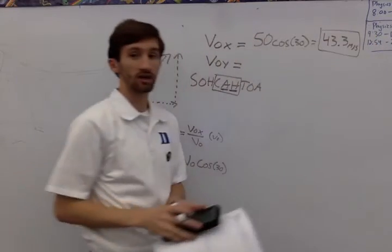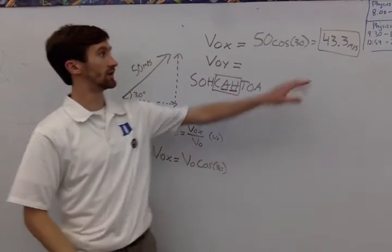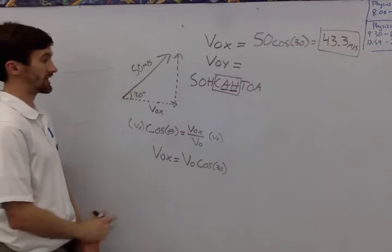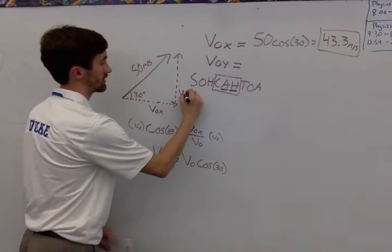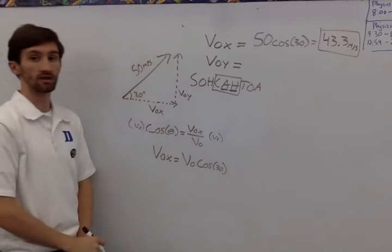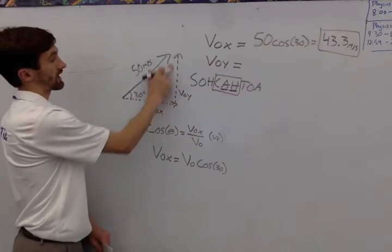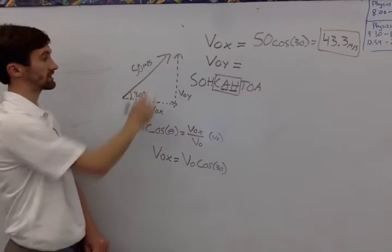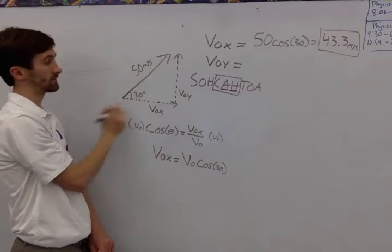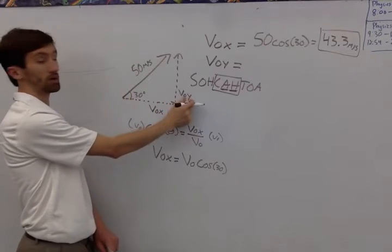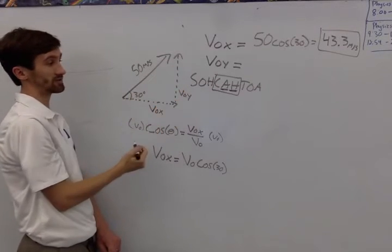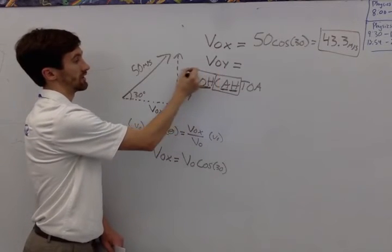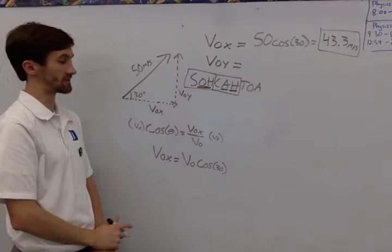Now we need to find the initial velocity in the y direction, this piece here. I know that my total velocity is the hypotenuse. The component I'm looking for, the y component, is the opposite. If I have opposite and hypotenuse, I know that I have to use sine.